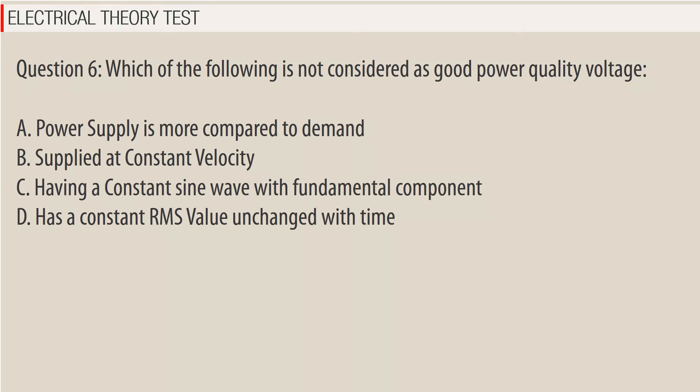Question 6: Which of the following is not considered as good power quality voltage? A. Power supply is more compared to demand. B. Supply at constant voltage. C. Having a constant sine wave with fundamental component. D. Has a constant RMS value unchanged with time.